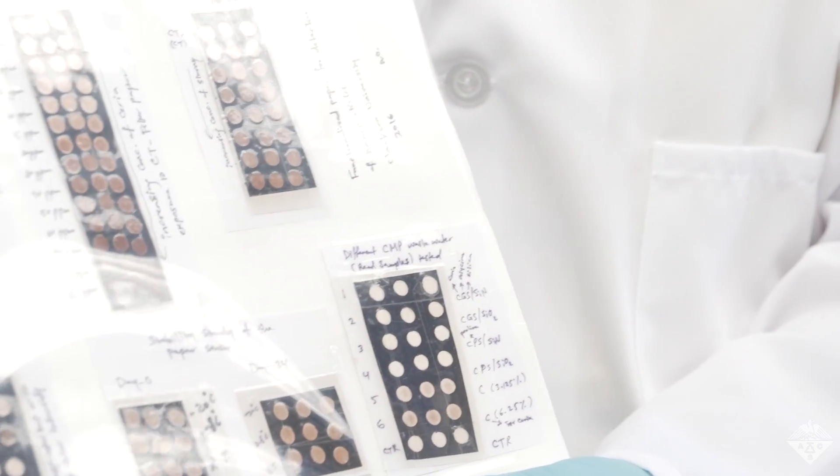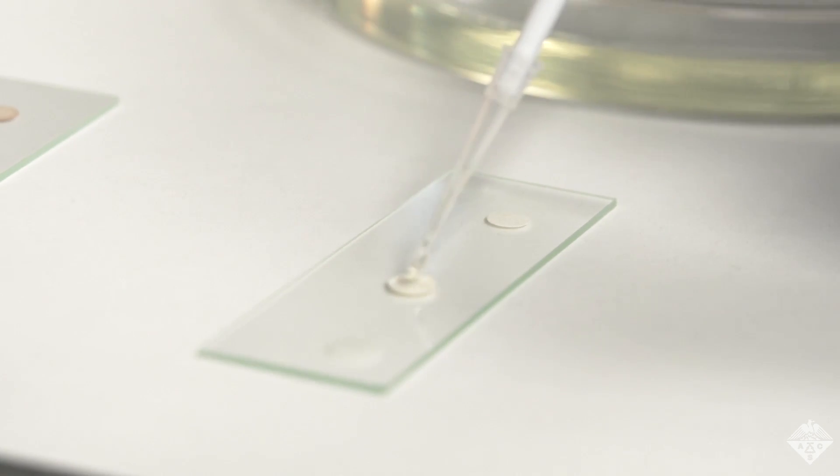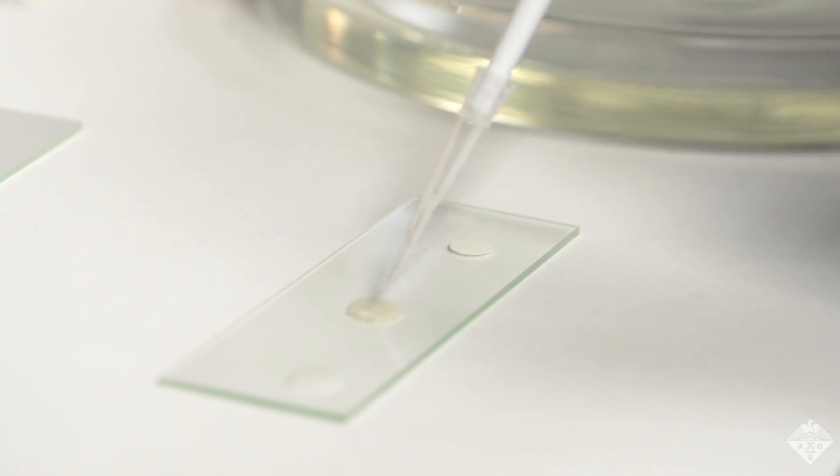The intensity of the change indicates how concentrated the analyte is. Since everything needed to operate the sensor is incorporated into the paper, users don't need to add anything other than the sample being tested.